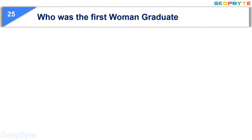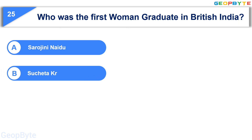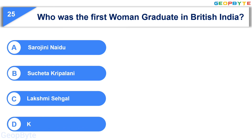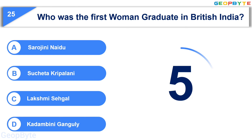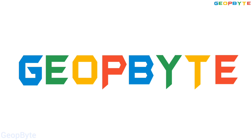Moving to the twenty-fifth question: who was the first woman graduate in British India? Option A: Sarojini Naidu, Option B: Sucheta Kriplani, Option C: Lakshmi Sehgal, Option D: Kadambini Ganguly. Your time starts now. Your time is up and the correct answer is Option D: Kadambini Ganguly.